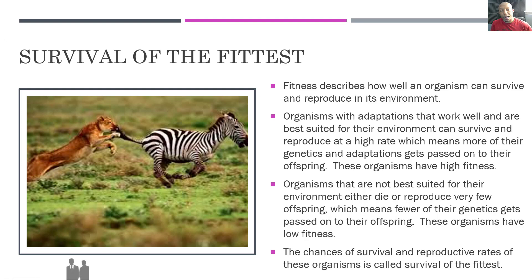Let's take a look at this female lion as an example. Her job is to hunt, capture, and kill this zebra. Going back to survival of the fittest, this female lion must have several special adaptations — she needs to be very fast, agile, able to change direction quickly, and very strong. If she has all these adaptations, she'll be able to kill the zebra, giving her a higher likelihood of passing on her genes to the next generation. This is an example of survival of the fittest.